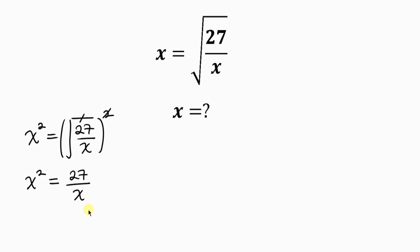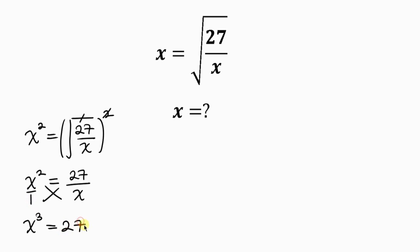Now we can cross multiply. So cross multiplying: x squared times x is x cubed, and this is equal to 27 times 1 — there is an invisible one here — which is 27.